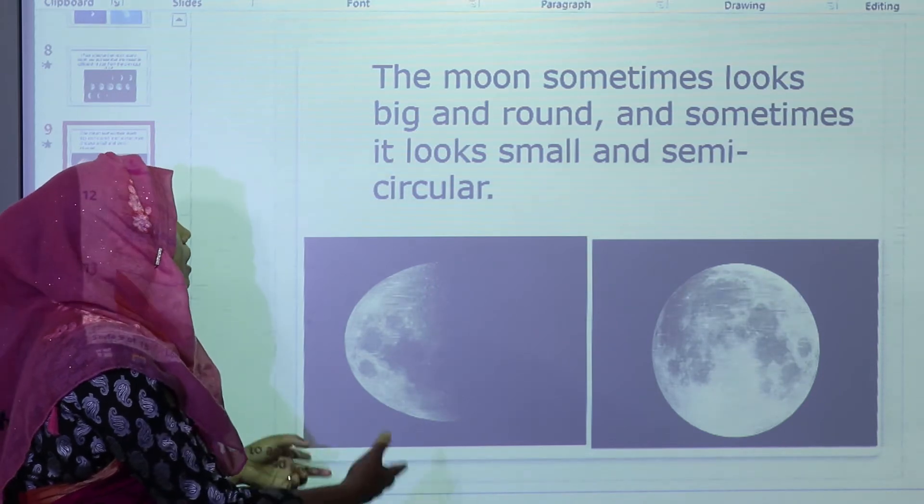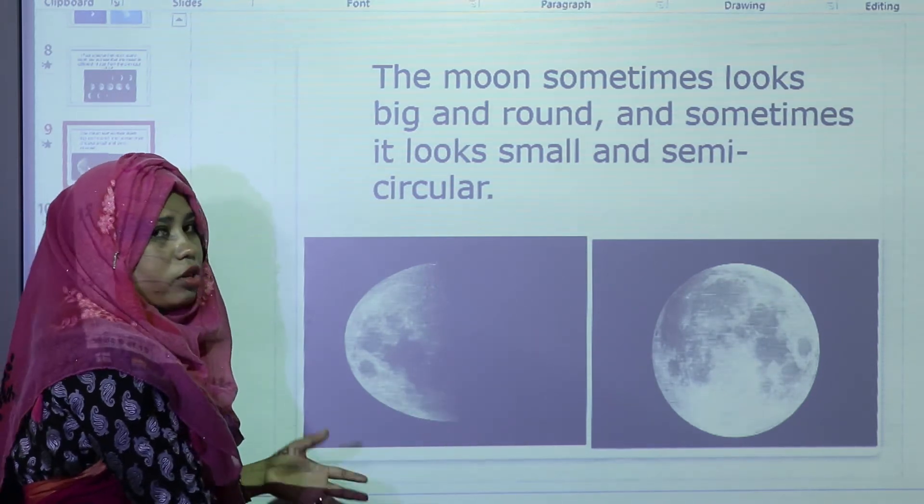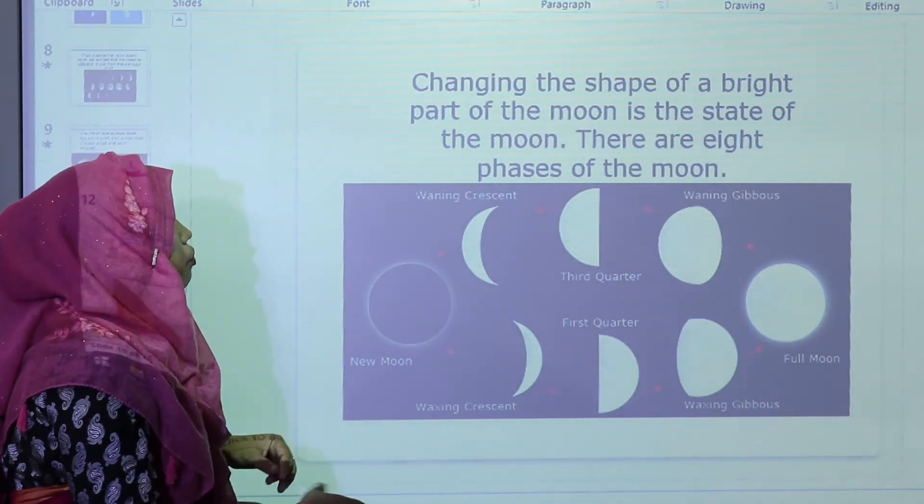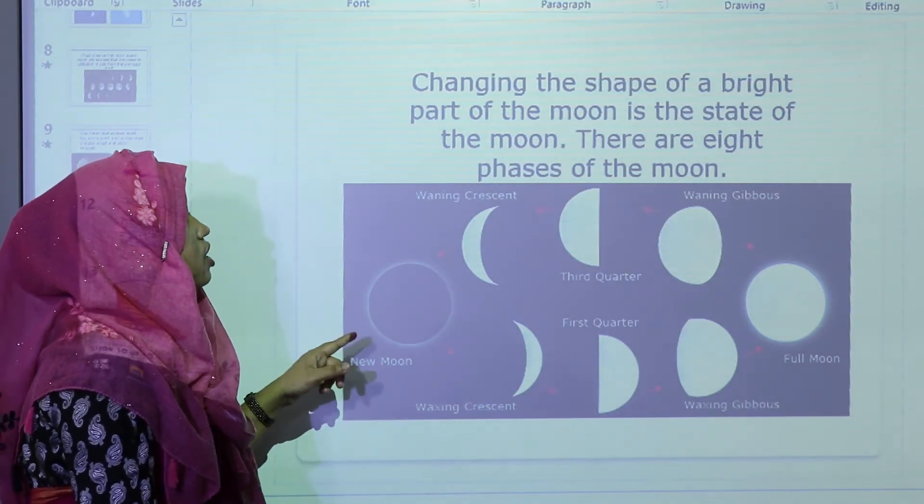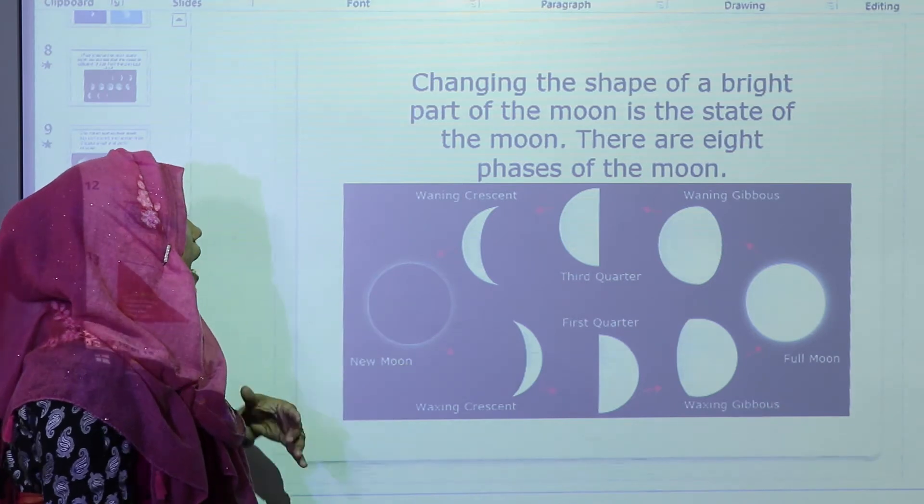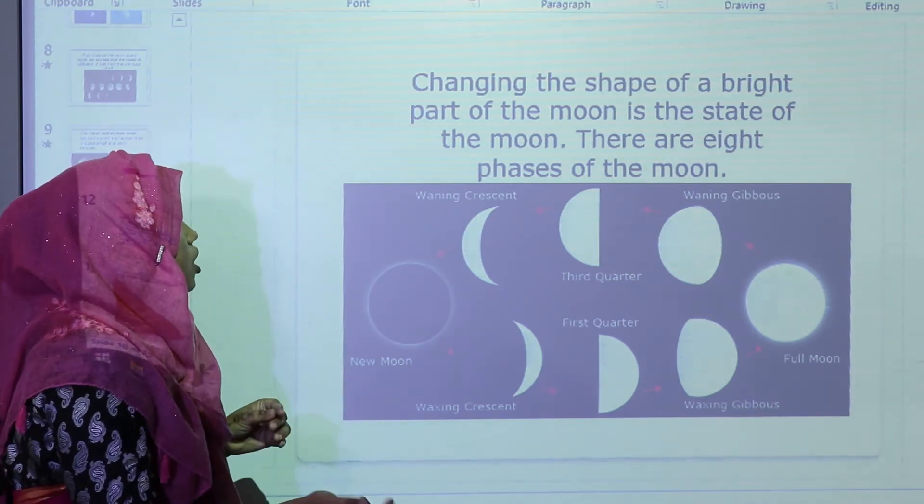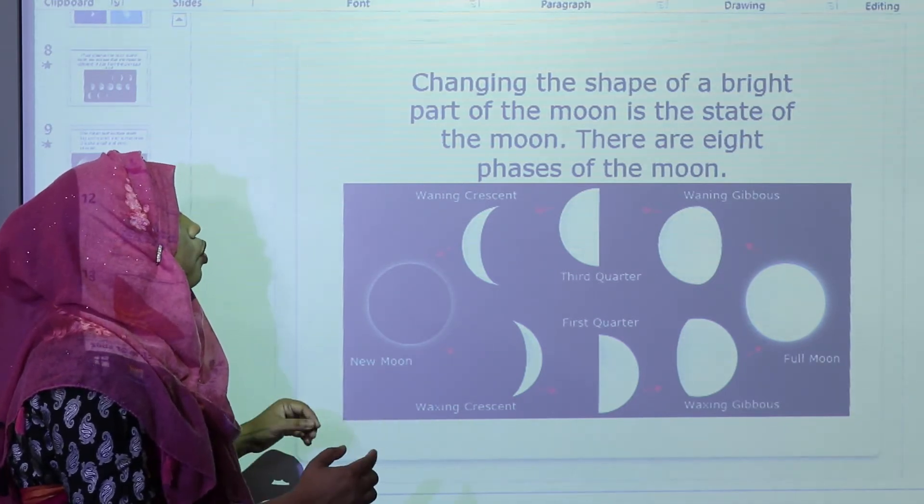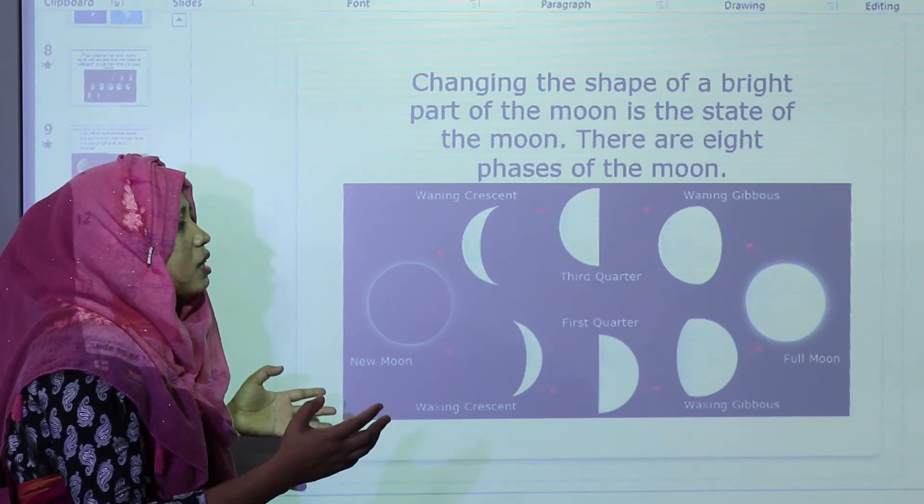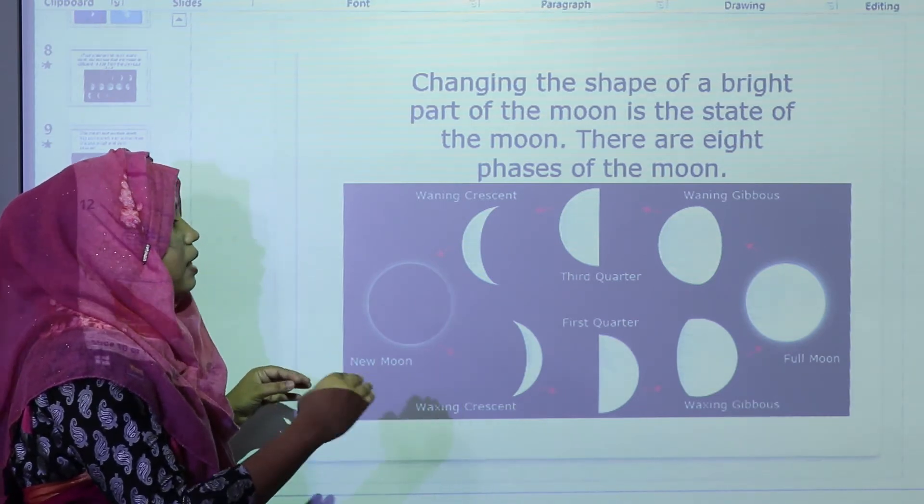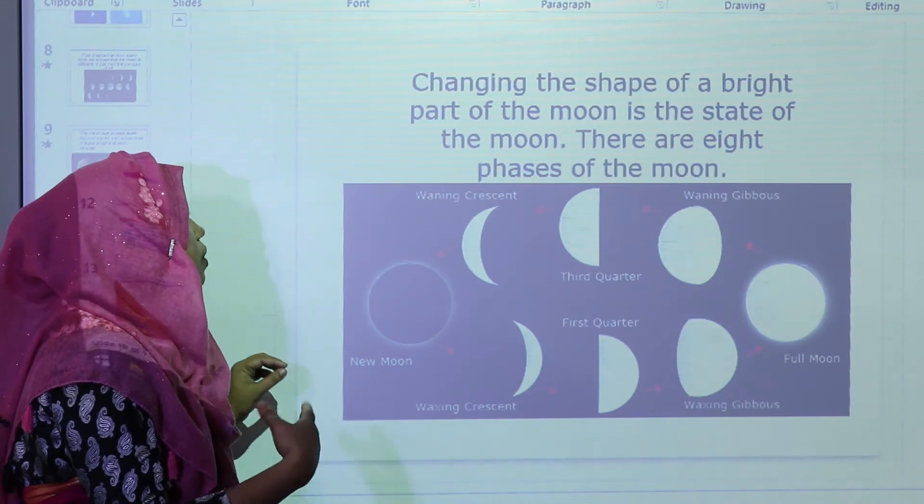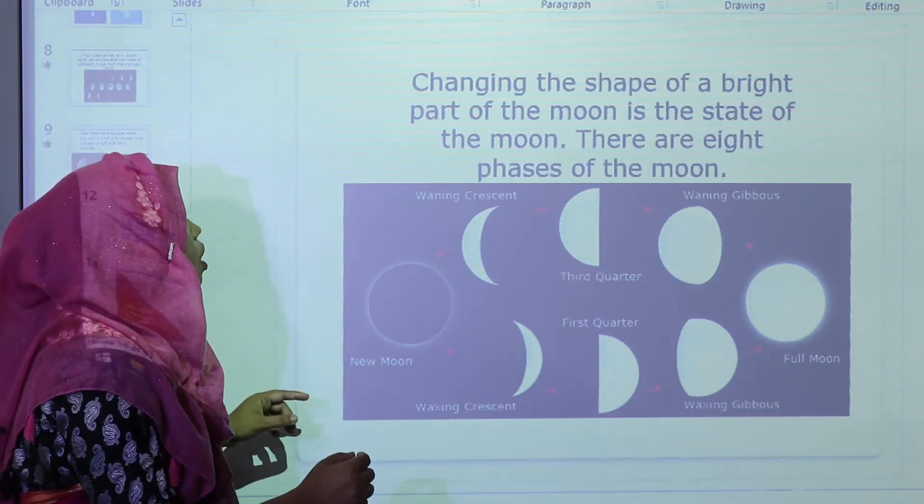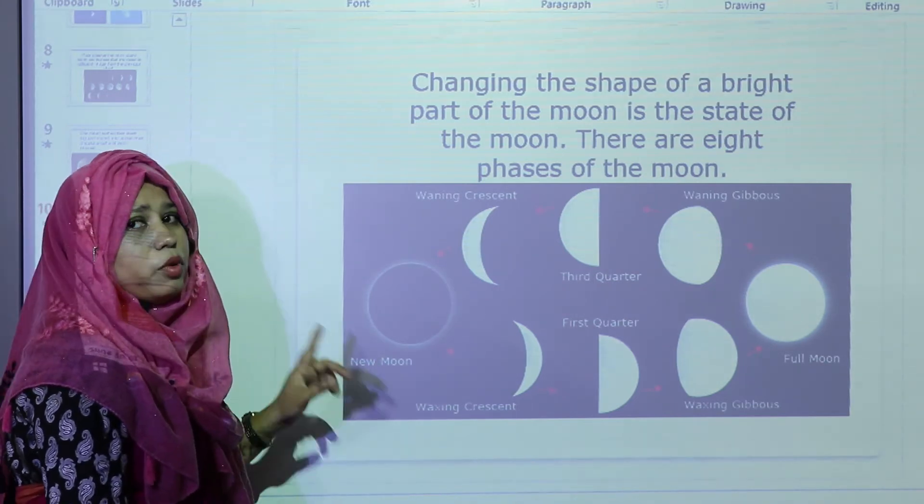The changing shapes of bright parts of the moon is the state of the moon. There are eight phases of the moon. The shape of the bright part, not the dark but bright part of the moon, is the state of the moon. The moon changes phases night by night, day by day. And the change of these moons is called the moon's phases. There are eight phases of the moon.